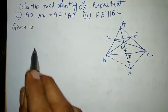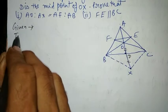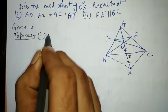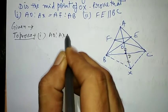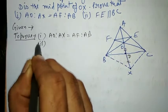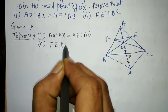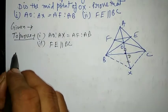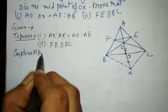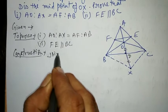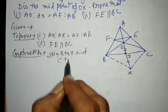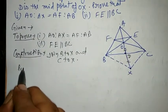Given: write from the question itself. To prove: first part — AO upon AX is equal to AF upon AB; second part — FE is parallel to BC. Construction: join B to X and C to X.